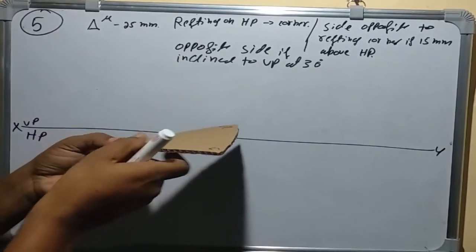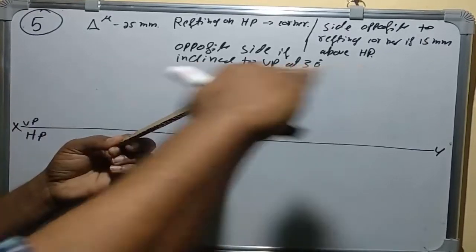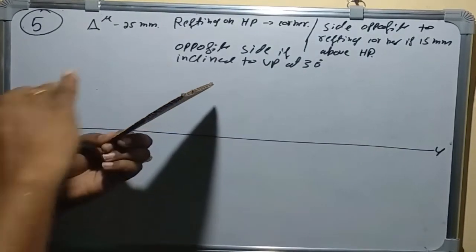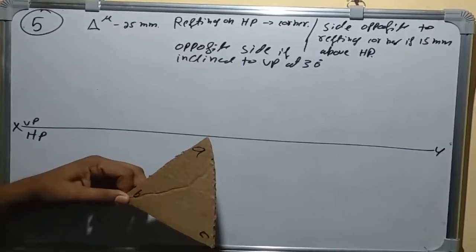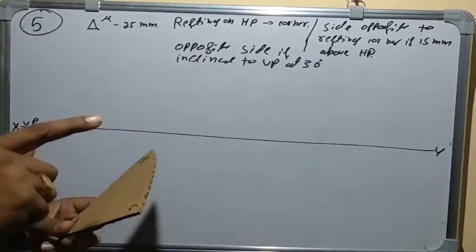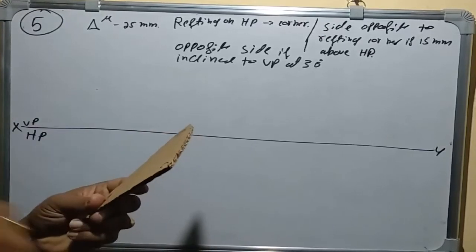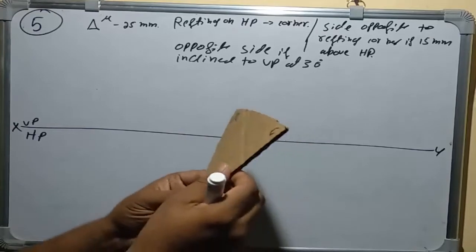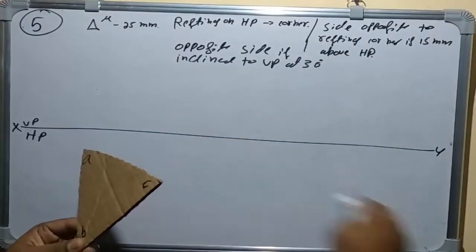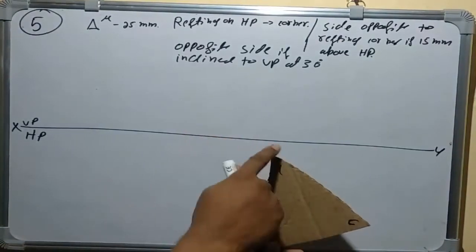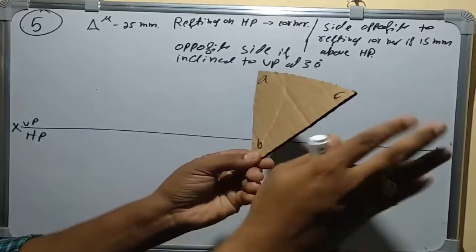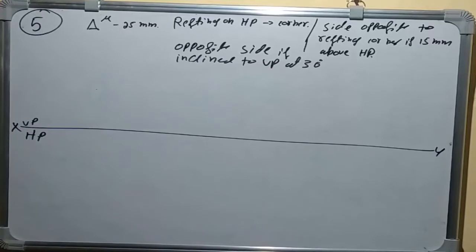We take the straight line and keep lifting it until it touches the 15 mm locus line, after which we get the top view for the second step. In the third step, the side opposite to the resting corner is inclined to VP at 30 degrees. We draw a 30-degree line and place that edge on it. The final front view is obtained on the VP. This is how we solve this problem.